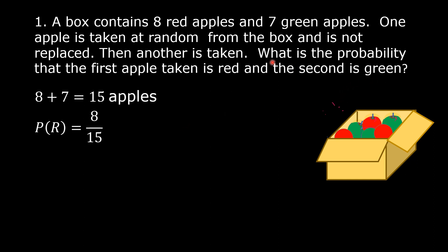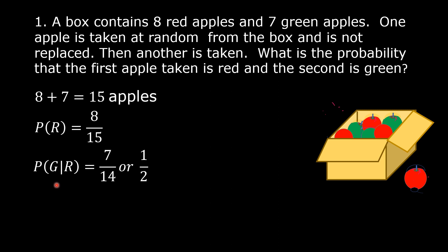Let us represent the second event of taking a green apple from the box by G. After the first event of taking a red apple, since the apple is not replaced, the total number of apples in the box is lessened by 1. So instead of 15 apples, there are now only 14 apples in the box, but the number of green apples is still equal to 7. So the probability of G given that R occurred is equal to 7 over 14, or 1 over 2.